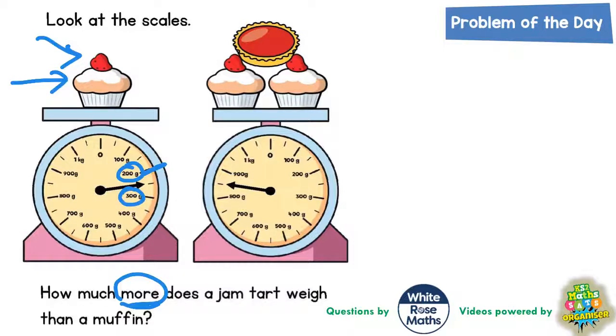Well, halfway between 200 and 300 is 250 grams, so the muffin must weigh 250 grams. But over on this scale we've got two identical muffins, so if the muffin on the left hand side weighs 250, each muffin on the right hand side must weigh 250, so we might as well write 250 grams on both of these muffins.